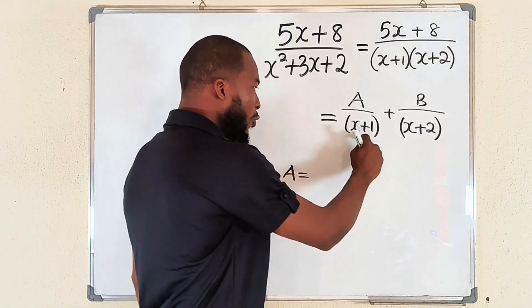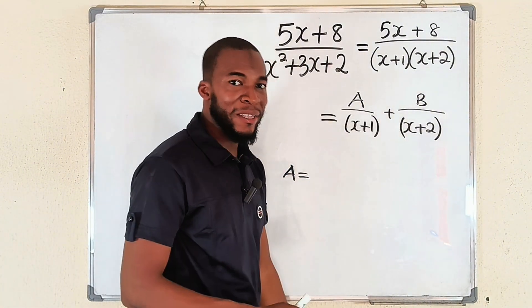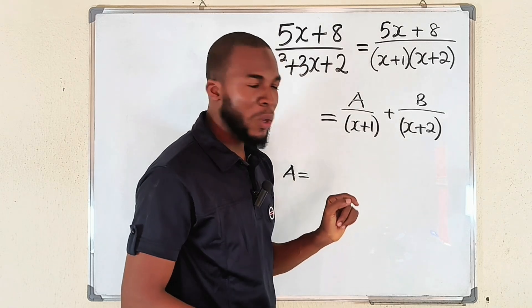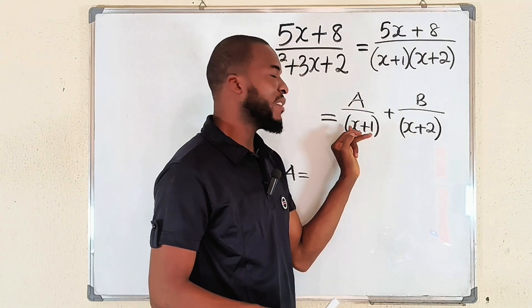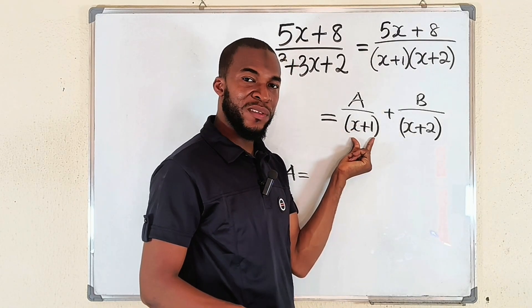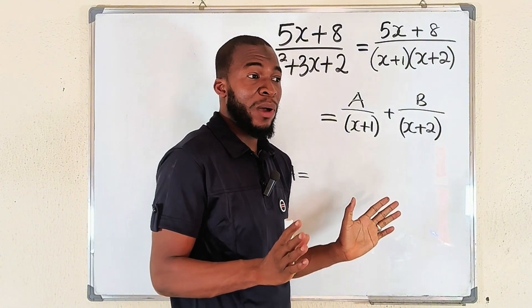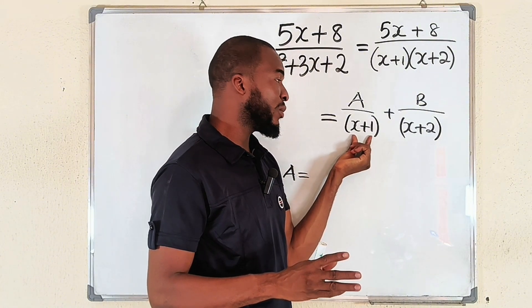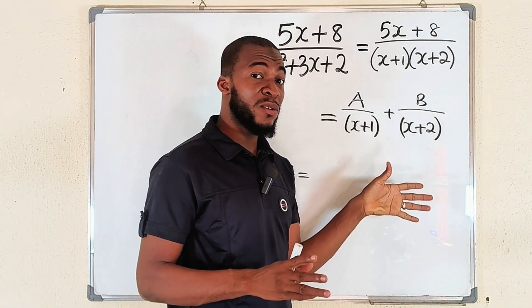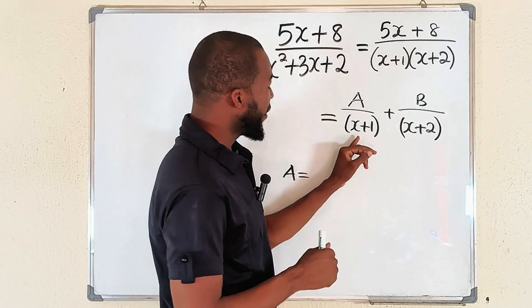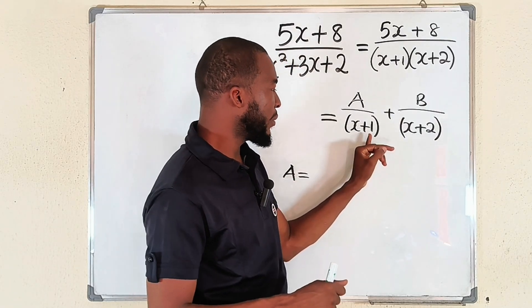Look at that factor under A, (x+1). What value of x do you think will make the whole of this to be 0? That's what you have to think about. Or otherwise you take (x+1), set it to be equal to 0, and solve for x. Definitely minus 1, because minus 1 plus 1 is 0.